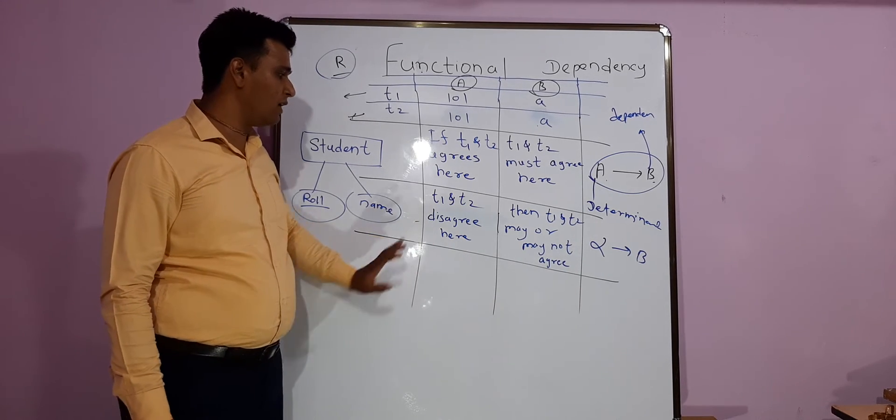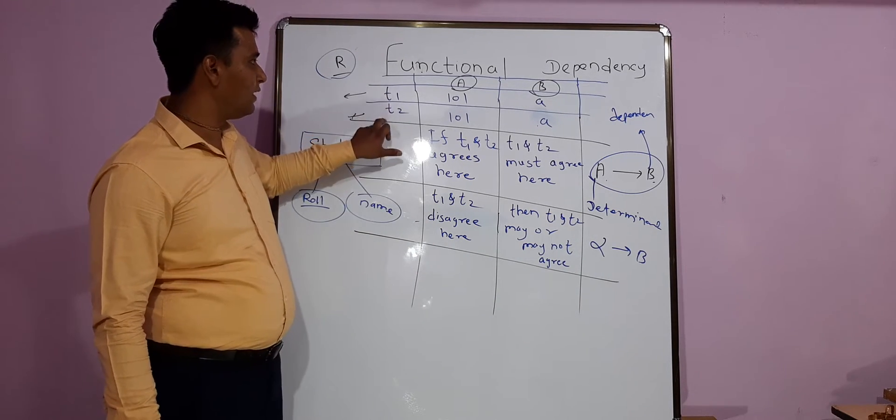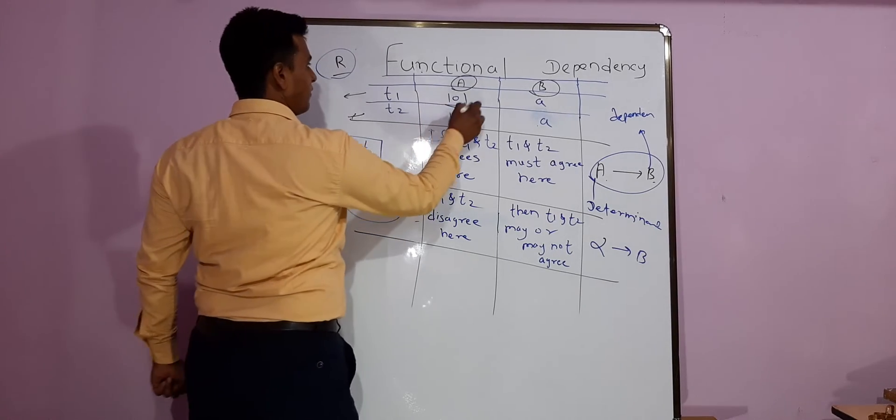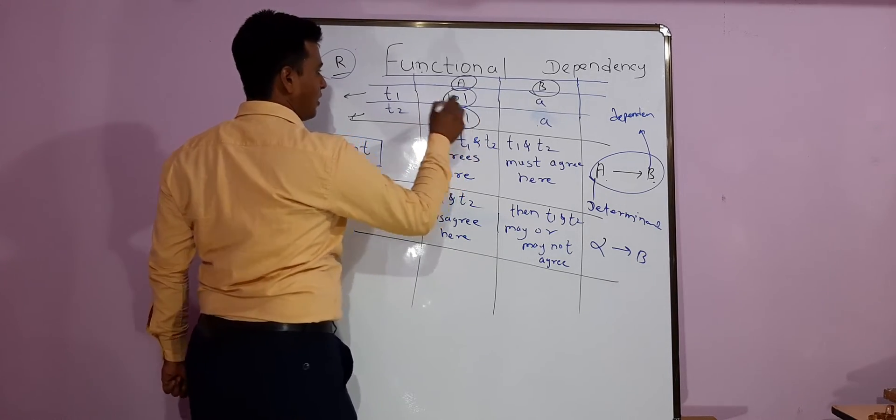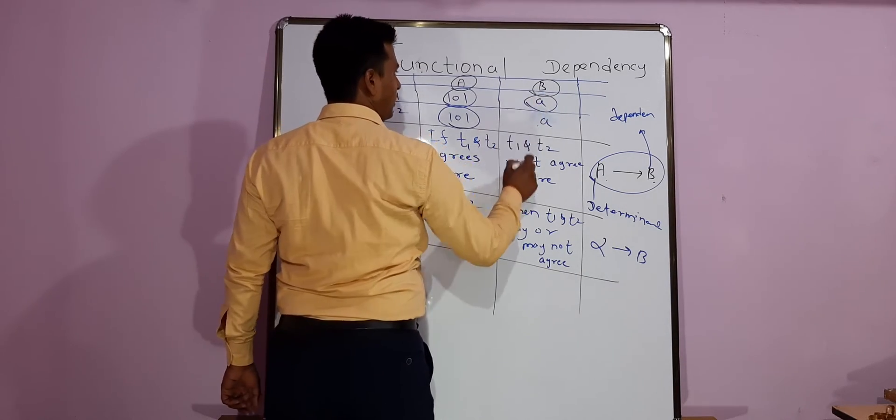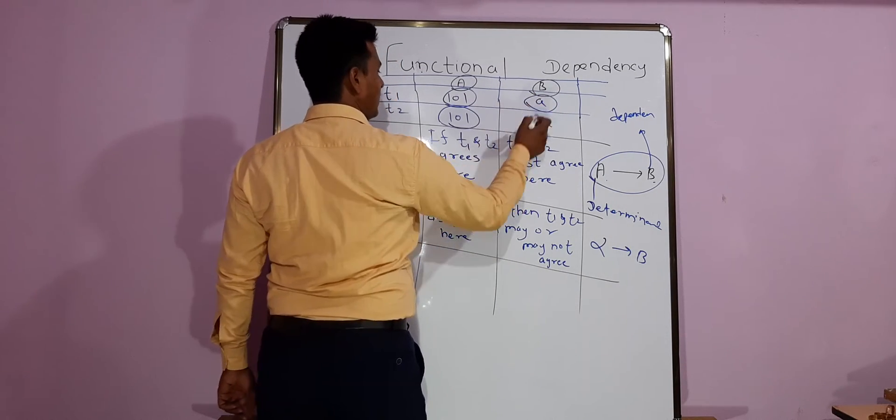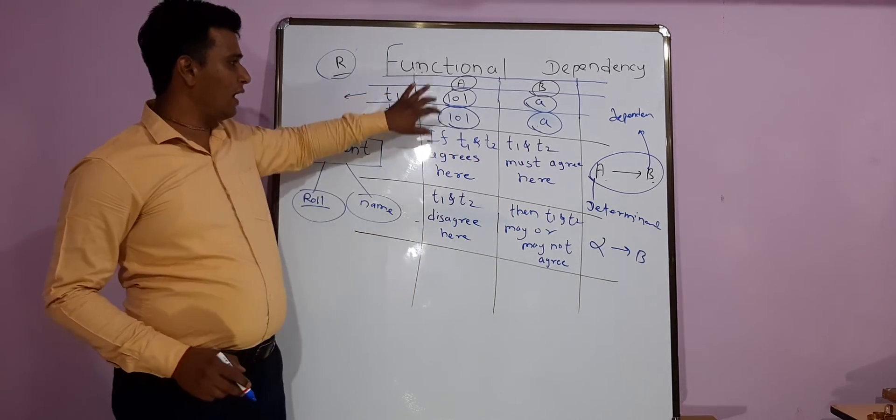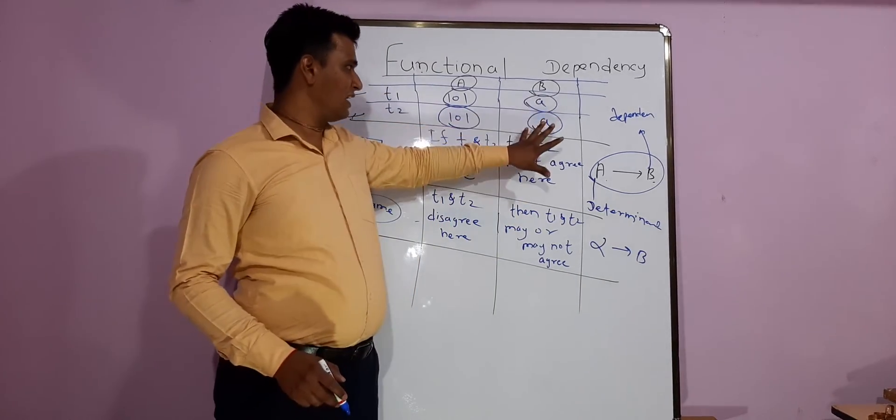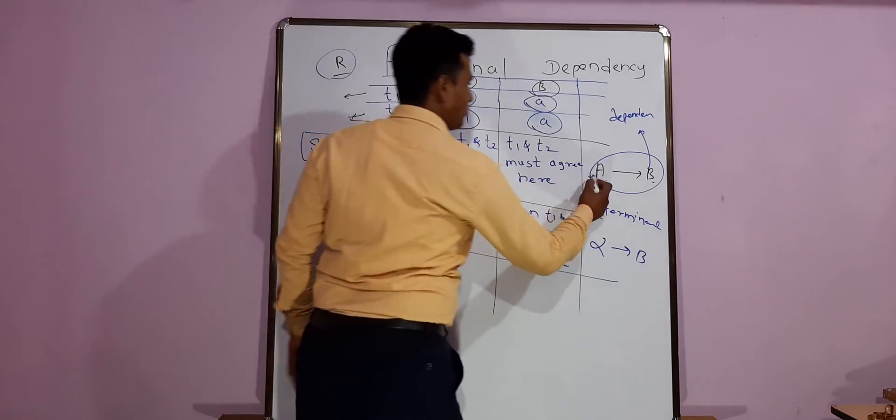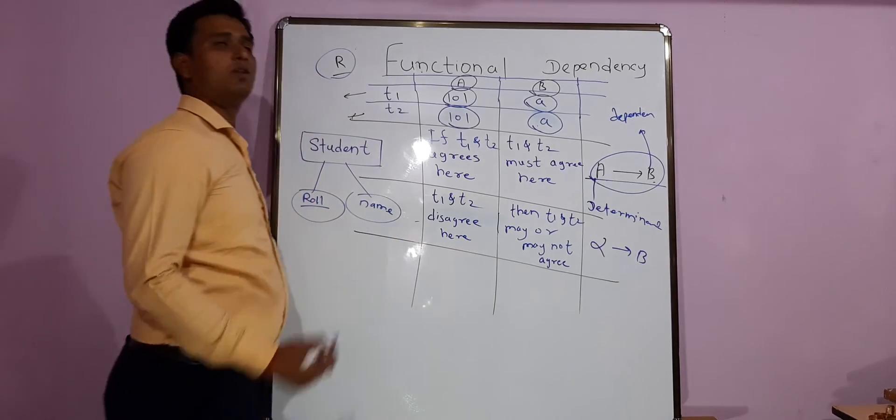In many cases, T1 and T2 will disagree here, meaning let's say T1 and T2 are having 101 and 101. So here you can find out T1 is having 101, again T2 is having 101 and it is also followed in attribute B. B is for T1 it's A and for T2 it's A, meaning T1 and T2 agree here. Again T1 and T2 must agree here. This is followed, meaning you can say that A determines B for this relation.